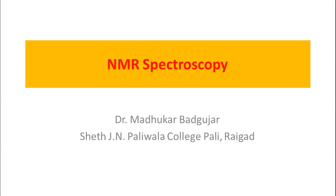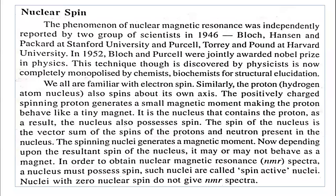We want to see what type of changes take place. To understand NMR spectroscopy, we should first understand nuclear spin. The phenomenon of NMR was given by the scientists Bloch, Hansen, and Packard. Later, Purcell explained NMR spectroscopy, and these two groups got the Nobel Prize. Bloch and Purcell were awarded jointly the Nobel Prize in Physics, but this technique is very useful for chemistry, biochemists, and structural elucidation.